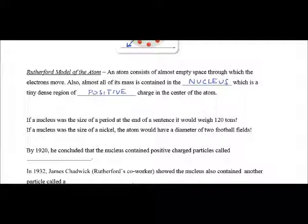How dense is it? Well, if a nucleus was the size of the period at the end of the sentence, it would weigh 120 tons. If the nucleus was the size of a nickel, the atom would have a diameter of about two football fields. So it's a dense, tiny region of positive charge.